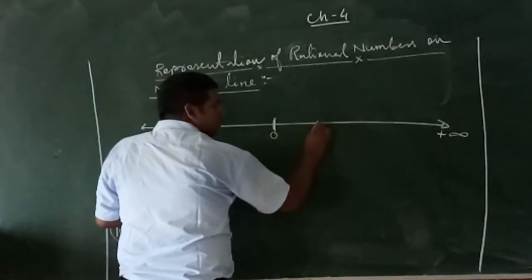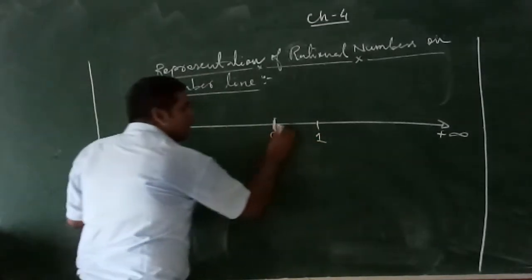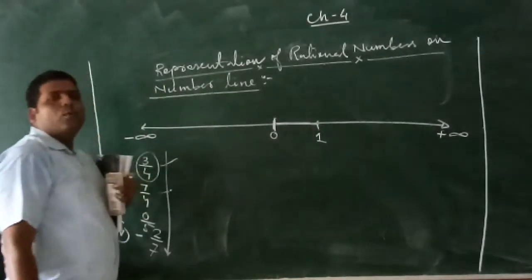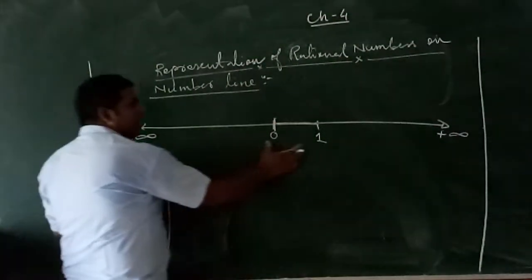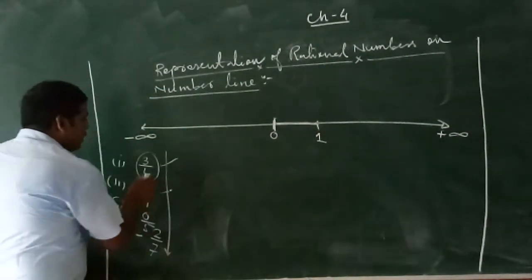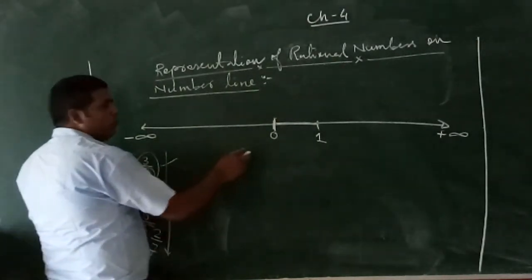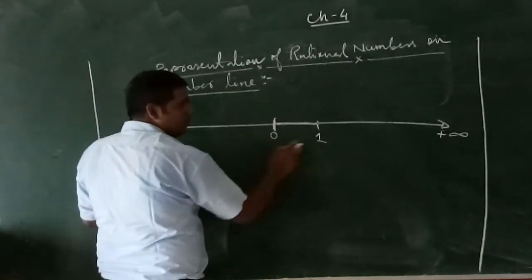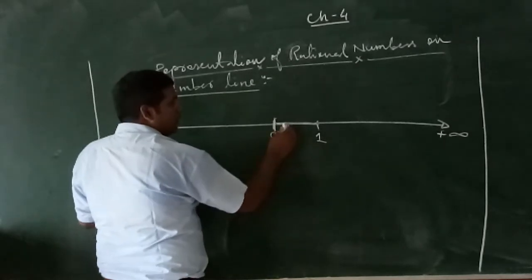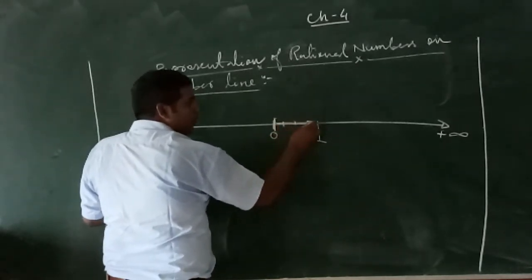It means that the value of three by four lies between zero and one. So if we mark one here, then three by four lies between zero and one. How can we represent three by four on this number line? First of all, the denominator is four, so we mark zero to one in four equal parts.